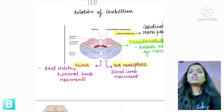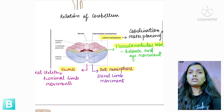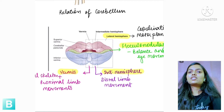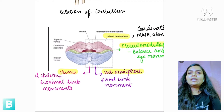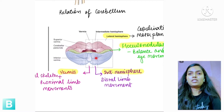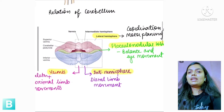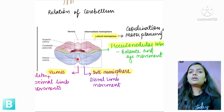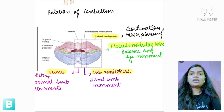Now let's start with the structure of Cerebellum. Cerebellum has distinct parts. The central most part is called the vermis. Then there are two hemispheres — right and left. Each hemisphere is divided into two parts: the lateral most part is called the lateral hemisphere, and the part between the vermis and lateral hemisphere is called the intermediate hemisphere.